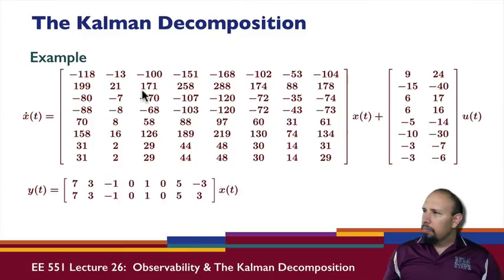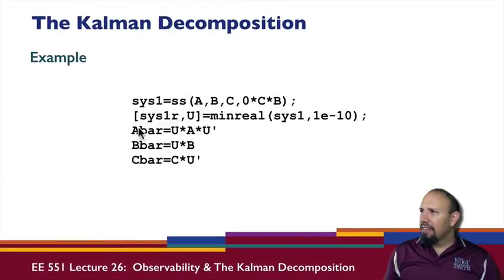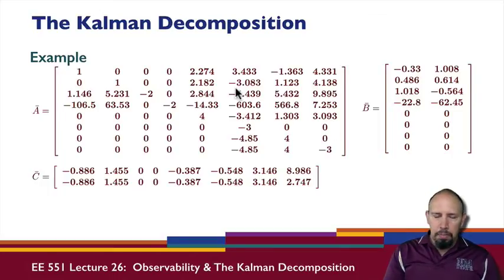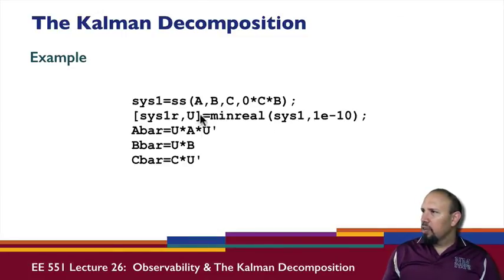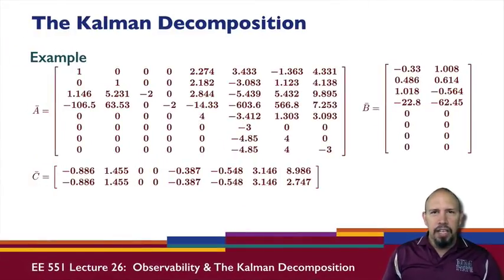Looking at a particular example for a system — it's a fairly large system. We notice these two outputs are almost identical, with one small difference. If we go through and do the Kalman decomposition using MATLAB, we get A bar, B bar, and C bar. We can see the zeros in those places we expected. We can use the command 'minreal' — minimum realization — which gives us the transformation matrix and returns the state space of the system with all the uncontrollable and unobservable parts removed. This is the Kalman decomposition.